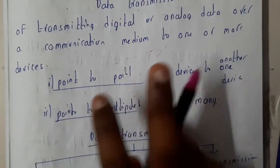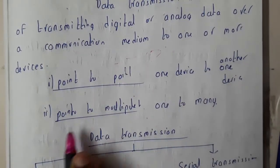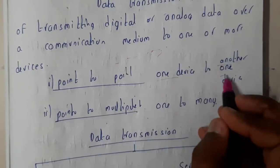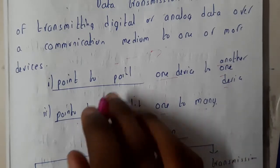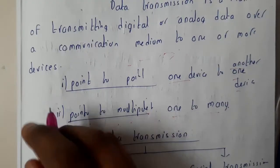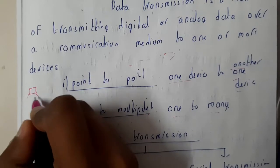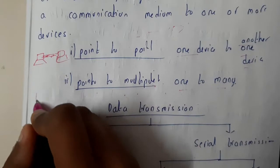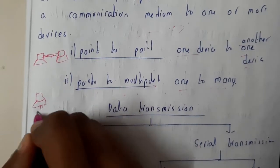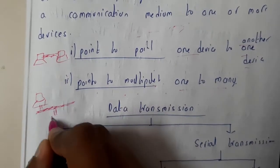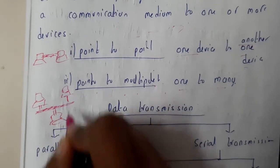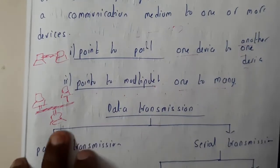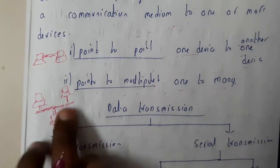We have two types: point-to-point and point-to-multipoint. Point-to-point means exactly one device to another device. Point-to-multipoint means one to many devices. I have drawn a diagram for this. Here we will be having a dedicated line for two systems, and here the systems are connected like in bus topology. This is point-to-point — a dedicated path — and this is point-to-multipoint because there are multiple devices on a single path.